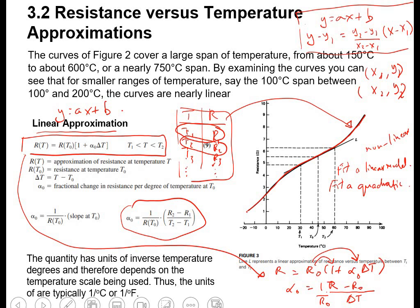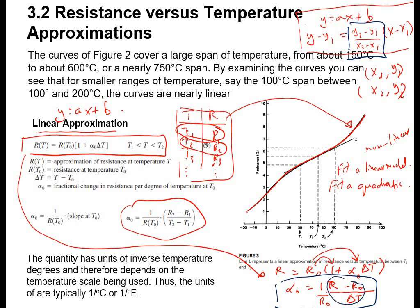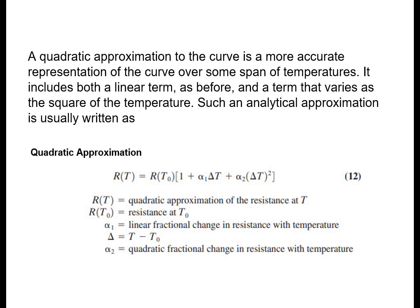Looking at this equation and thinking about it — why doesn't it look like the slope? Actually they are the same. R − R0 is ΔR over ΔT, and that is ΔY over ΔX. We have 1/R0 because we already took R0 as a common factor. The original slope is R0 · α0. So that is the original slope, and that's why we have a different equation with the 1/R0 term. This proves that this is the straight line equation we are going to use.